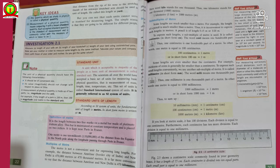King Henry the First declared that distance from the tip of his nose to the stretched thumb of his sideways stretched arm should be used as unit of length. He called this length as yard. But you can see that such units cannot serve as standard for measuring length. The simple reason is that they are going to be different for different people.